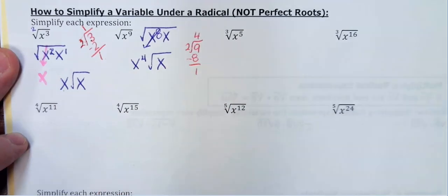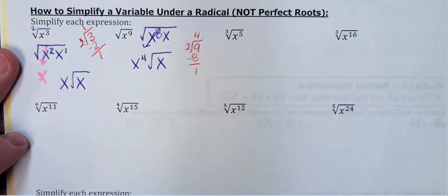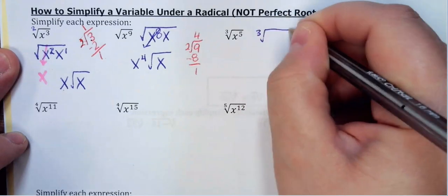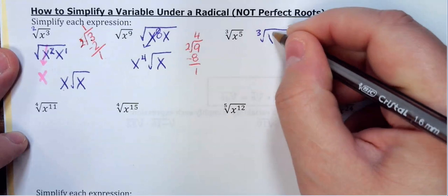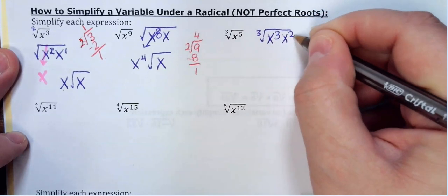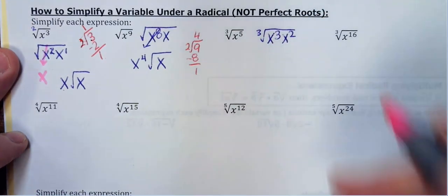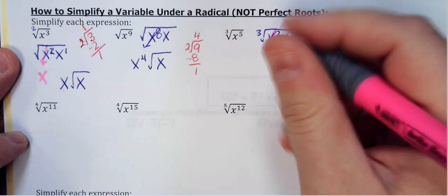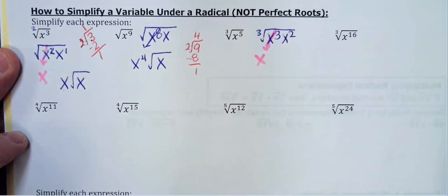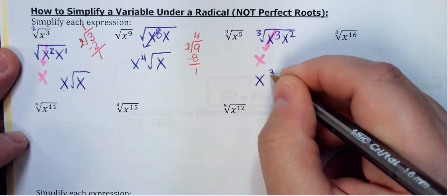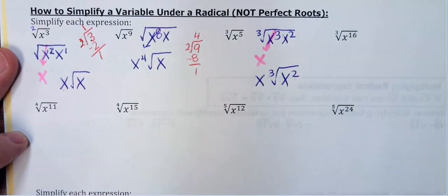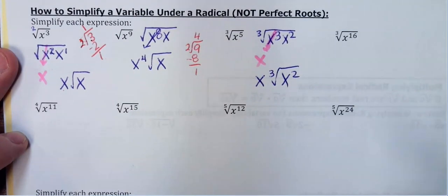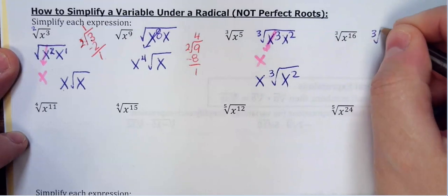For a cube root, I need my exponent to be divisible by 3 to take anything out. I rewrite x⁵ as x³·x², pull out an x, and x² is left underneath. 3 does not go into 2, so there are 2 left under the cube root.